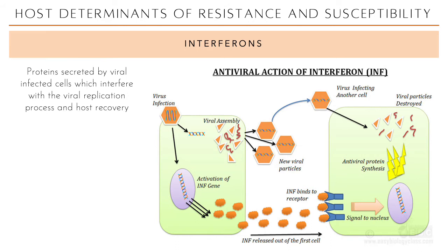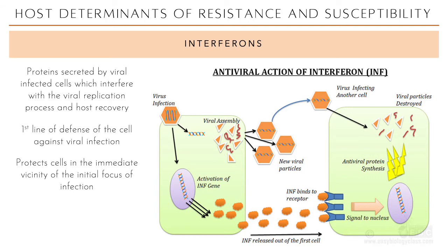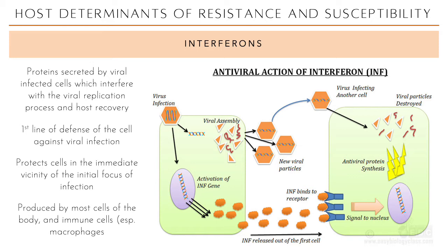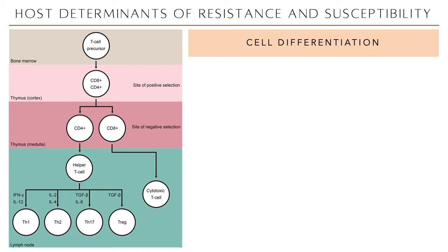Interferons are proteins secreted by infected cells that interfere with the viral replication process and aid host recovery. They are considered the first line of defense of the cell against viral infection. Macrophages are major producers of large amounts of interferon — specifically interferon alpha and gamma — and can protect cells in the immediate vicinity of the initial local infection.